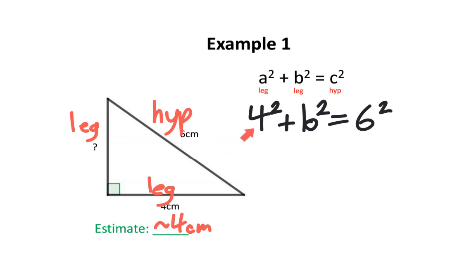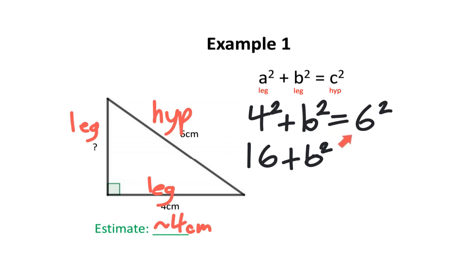4 to the power of 2 is the same thing as 4 times 4, and that is equal to 16. We can't do anything with b squared, so that's going to stay the same. And 6 to the power of 2 is the same thing as 6 times 6, which is equal to 36.